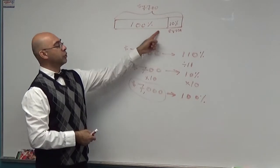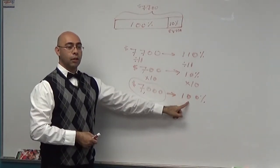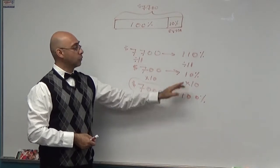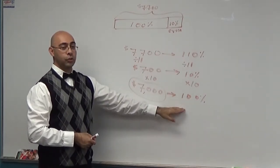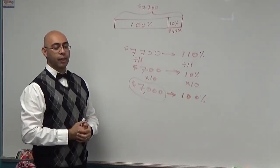They want to know the original amount. Original means what? 100%. You figure out how to turn 110 into 100. Once you can do that, then you can figure this out. Do the exact same thing.